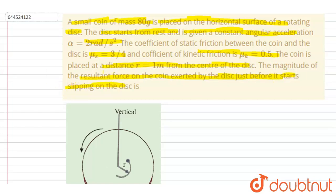So just before it starts slipping, limiting friction will act on the coin. And if you see, this is the coin - on this coin in vertical direction, normal reaction and in downward direction the weight is acting.